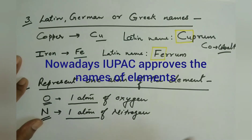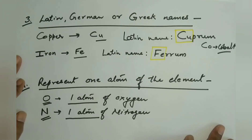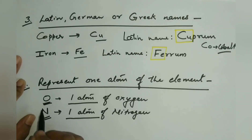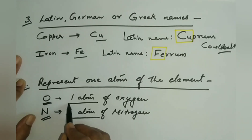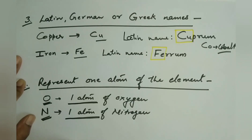This is how symbols were chosen for elements. Now, what does a symbol represent? Whenever we write the symbol of an element, it represents that element. For example, O represents oxygen, but it also represents one atom of oxygen. Similarly, if we write N, it represents nitrogen but also represents one atom of nitrogen. Keep in mind that the symbol of an element always represents one atom of that element.